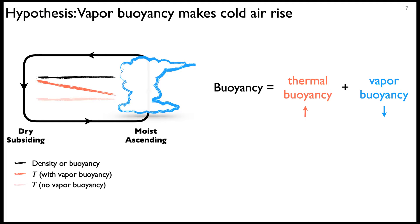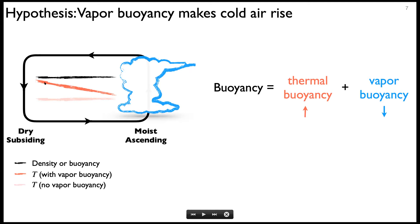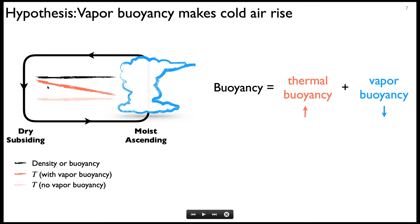We propose vapor buoyancy makes cold air rise. Here I'm drawing a cartoon of the large-scale circulation in the tropics — the moist ascending branch and the dry subsiding branch. Buoyancy, or virtual temperature, has two components: thermal buoyancy and vapor buoyancy. Because of the low Coriolis parameter in the deep tropics, buoyancy is horizontally uniform due to efficient gravity wave dynamics. When we move from moist columns to dry columns, vapor buoyancy is reducing. To maintain uniform buoyancy, thermal buoyancy develops — that is why there is a temperature tilt. This effect makes dry regions warmer than they otherwise would be in the absence of vapor buoyancy.